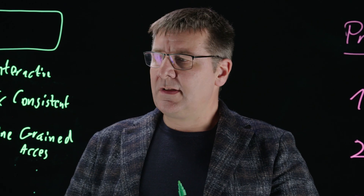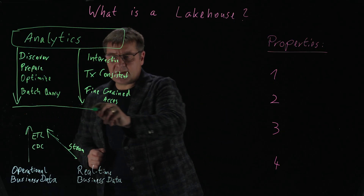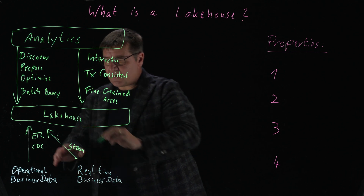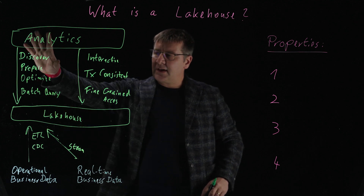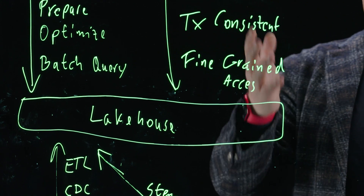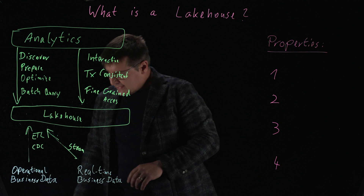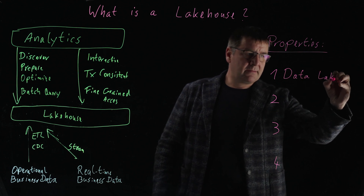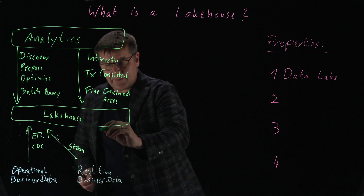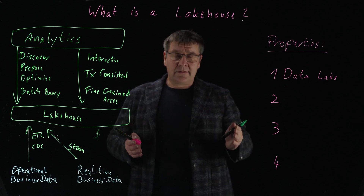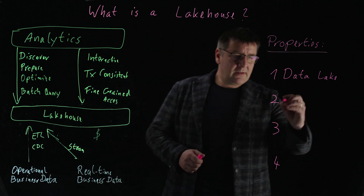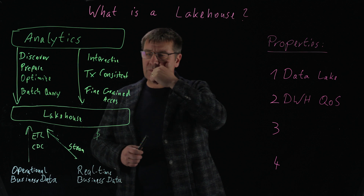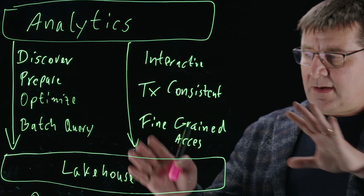Now let's talk about the data lake house and how it solves this problem. The key thing is that a data lake house is a one-stop shop for doing all of that — it's one form factor, one system, where you can take your data from other systems or from a real-time feed, ingest it, and get it from data discovery all the way to real productive interactive consumption with BI dashboards. A data lake house is effectively a data lake in architecture, which means it has the same cost profile — highly affordable and highly scalable. But at the same time, it gives you data warehouse qualities of service: transactional consistency, interactive response times, and fine-grained access control.